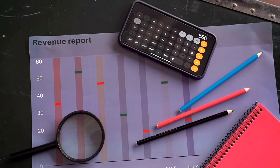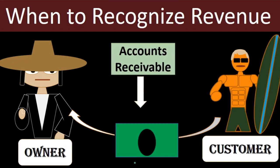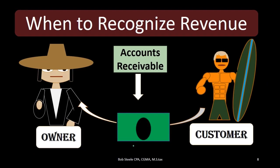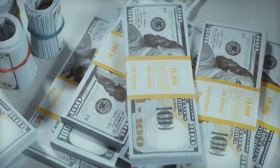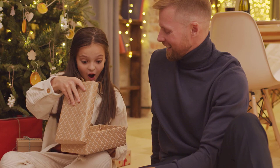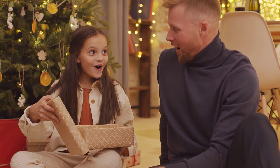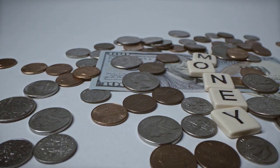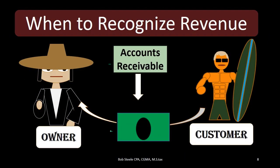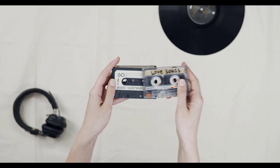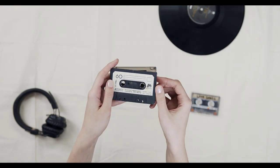What we will do instead is decrease the receivable account — the customer has now paid, so we reduce that asset — and increase the cash account. There is no effect on net income and no effect on the income statement at this point in time, even though cash is received, because the revenue was already recorded in the past when the work was done.